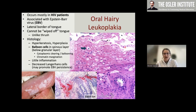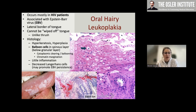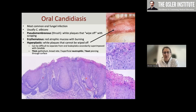Oral hairy leukoplakia is a rare but important entity due to its association with immunocompromised states. It occurs mostly in HIV or other immunocompromised patients and is caused by Epstein-Barr virus infection. It presents as a white patch on the lateral border of the tongue that cannot be wiped off. You see white balloon cells in the surface layers that stain positively for EBER, which is essentially diagnostic. The implication is that this patient is immunocompromised, which may be a new diagnosis.